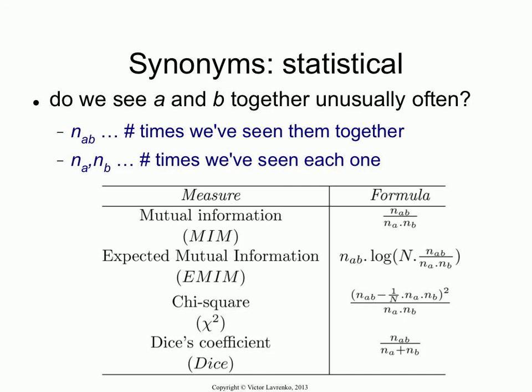If you divide every one of these terms by N, which is the total number of windows or documents that you have in your collection, then what you have on the top is the empirical joint probability of seeing A and B together. And on the bottom, you have the product of the marginals — probability of A times the probability of B. When you take the ratio, this is known as the likelihood ratio test.